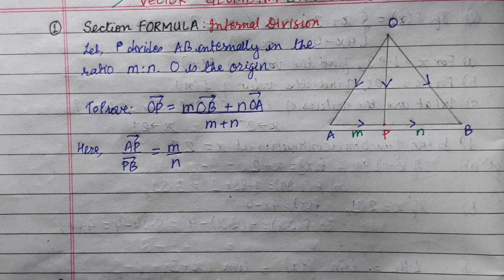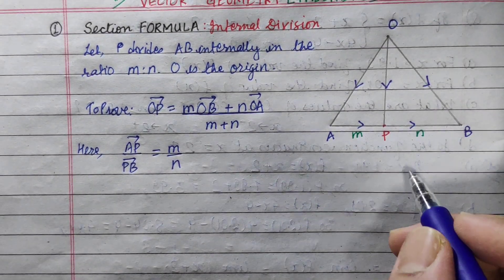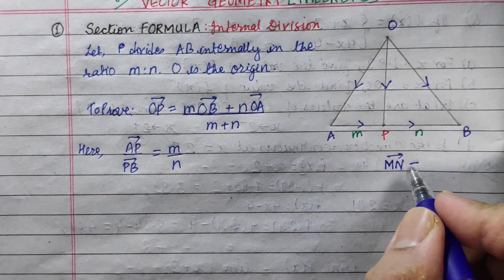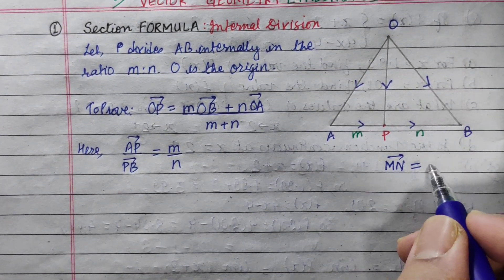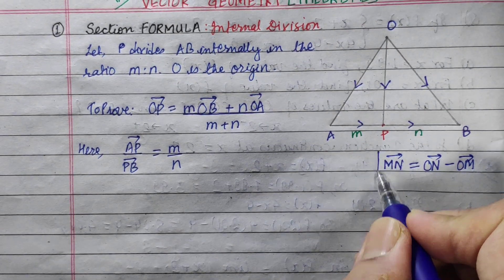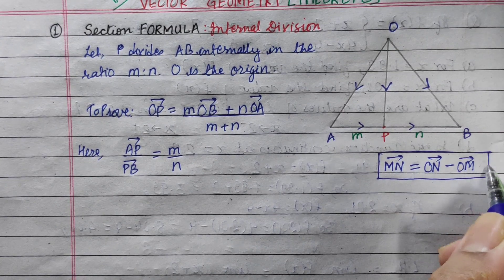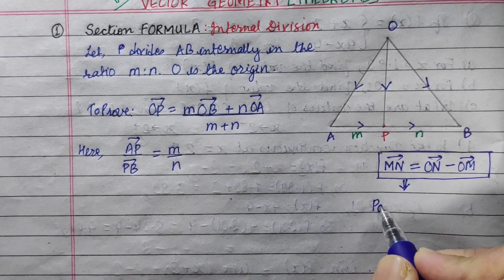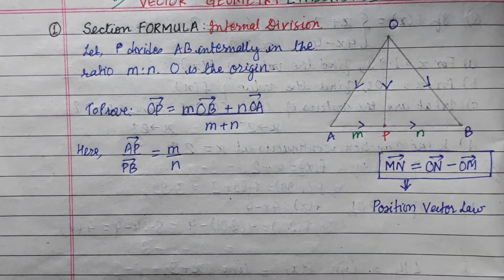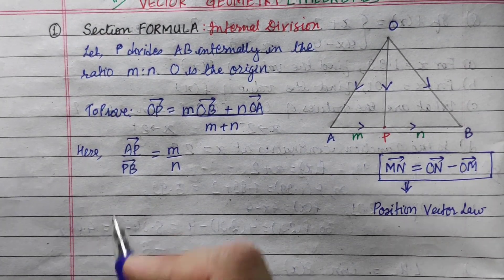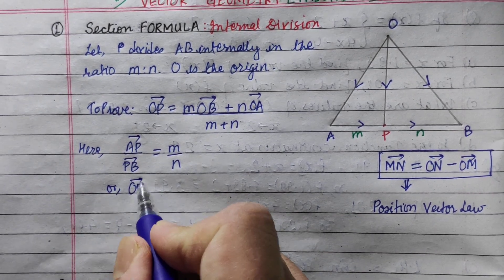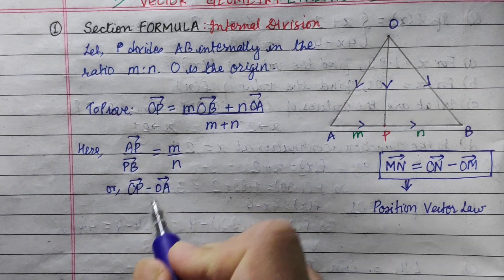Now we have the position vector law. We need to find AP vector using the position vector law: OP vector minus OA vector. We need the position vector to set up the derivation.